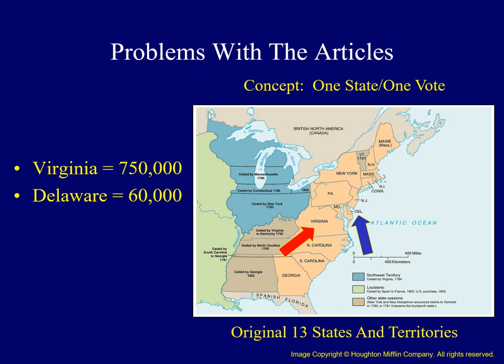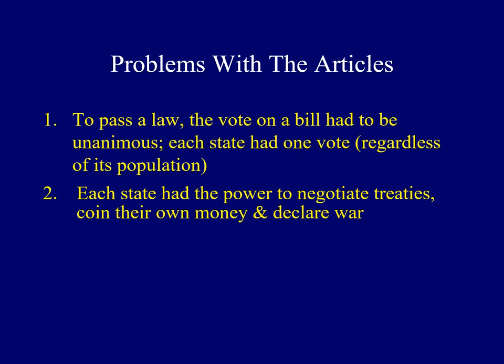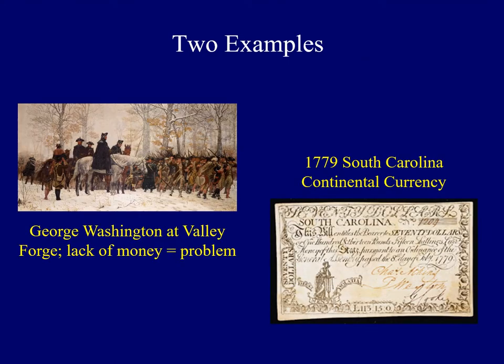Delegates from Virginia didn't think that was fair. In addition to these problems, each state had a tremendous range of power and authority — states could negotiate treaties, coin their own money, and even declare war. Theoretically, one state could be negotiating a trade deal with a nation while a different state might be ready to wage war against that same nation.